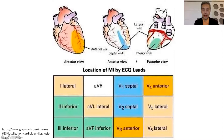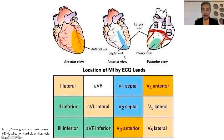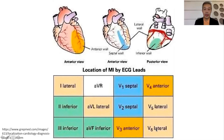If we see changes in V3 and V4, that will be the anterior part of the heart, subserved by the left anterior descending artery. V1 and V2 represent the septal portion. Combinations are quite common: changes in V1 to V3 indicate anterior septal, and V4 to V6 indicate anterior lateral involvement. The inferior leads are 2, 3, and AVF, where the right coronary artery is the one obstructed.